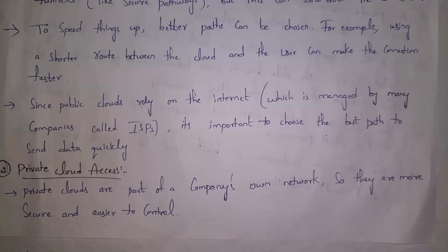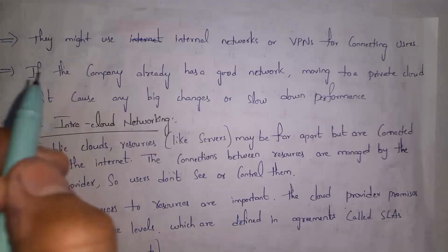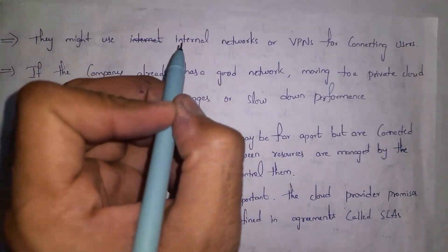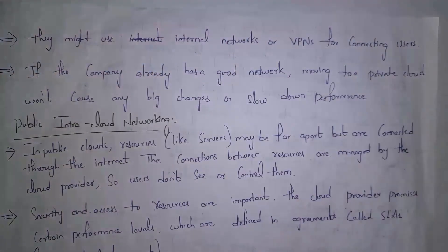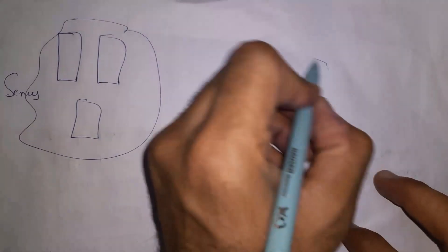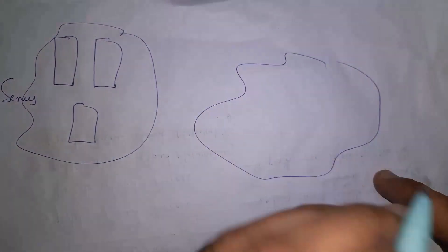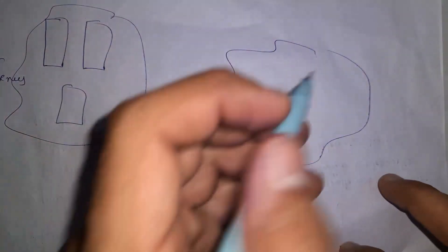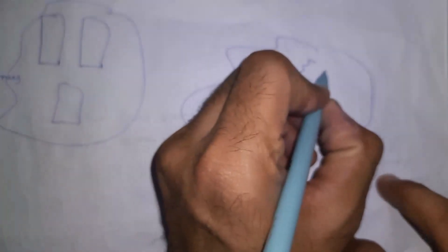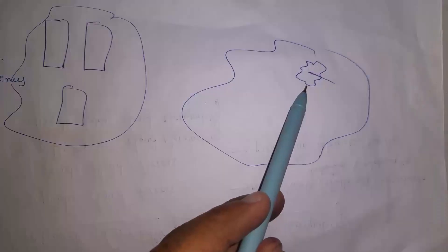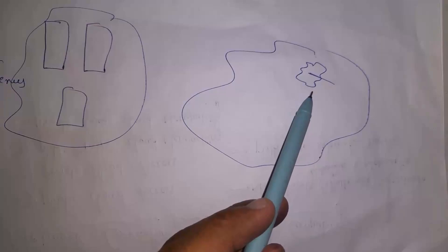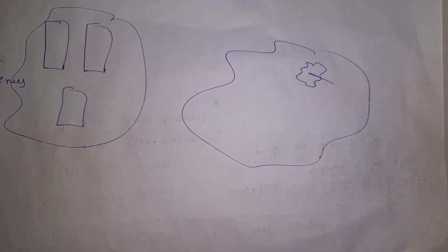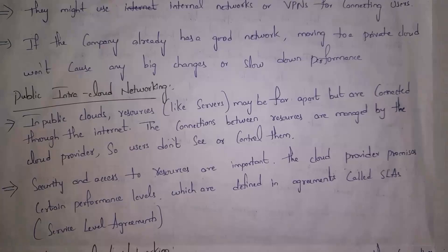Outside people cannot access a private cloud, so data will be secure. Private clouds might use internal networks or VPNs for connecting users. The internet is a big network that everyone can use, and inside it a company will create one small network — a virtual private network or internal network — that only company employees can connect to. So if a company already has a good network, they can easily move their data to a private cloud and still have good performance.